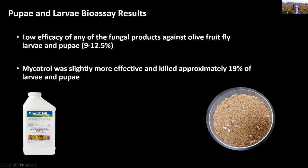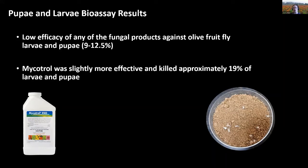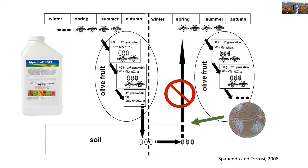Unfortunately, we found that pupae and larvae are not very susceptible to any of the three products tested. We were getting mortality rates around 9 to 12%. Micatrol was a little more effective, killing about 19% of larvae and pupae. This could be because larvae very quickly become pupae once they reach the soil — within hours they'll pupate — and the pupae are fairly resistant, likely adapted to naturally occurring fungi in the soil since they overwinter there for months. After our first year, we had some lab results that looked more promising, so we looked into this further.